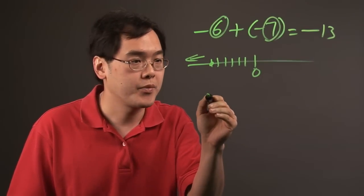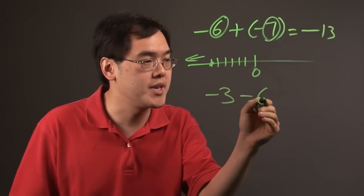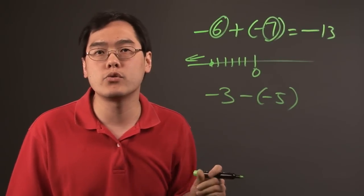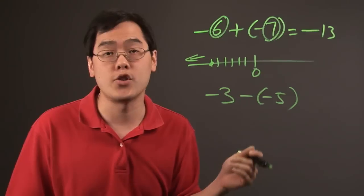When you're subtracting, let's say you have -3 - (-5). What that tells you here is when you're subtracting a negative number, it forces you to switch course. You're going in the other direction.